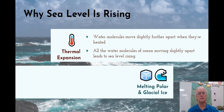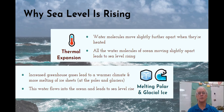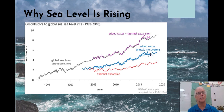We also have melting polar and glacial ice. The increased greenhouse gases lead to a warmer climate and more melting of ice sheets at both poles and glaciers throughout the world. This water flows into the ocean and leads to more sea level rise and more thermal expansion. As we can see here, due to thermal expansion there is a slight increase, and due to added melt water there is more of an increase. Since 1995, we have seen up to a 10 centimeter rise in sea level due to both thermal expansion and the melting of ice.